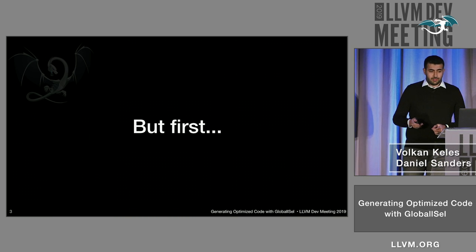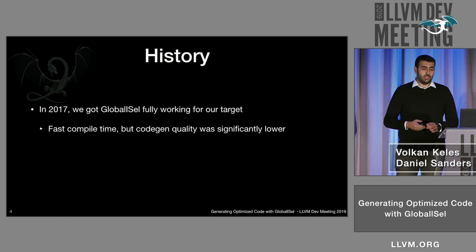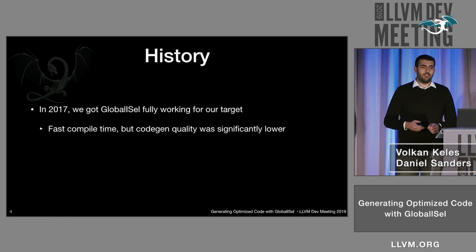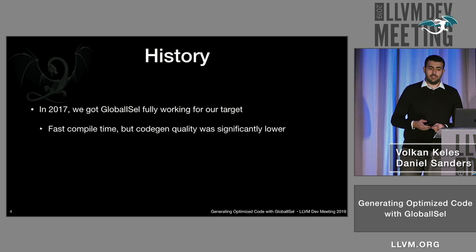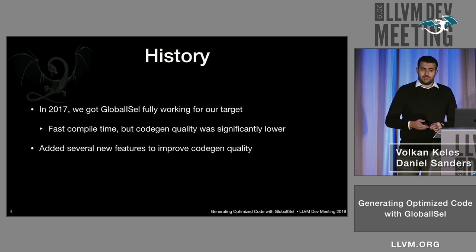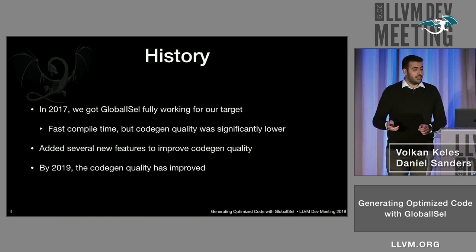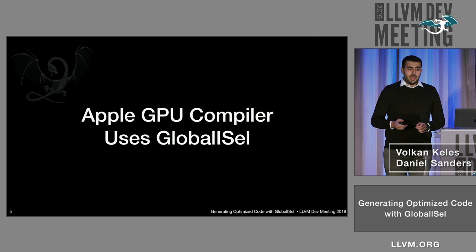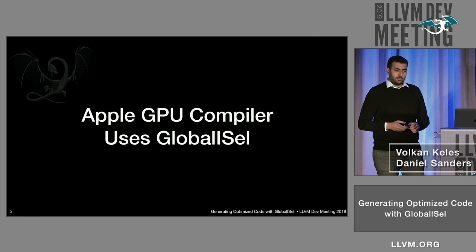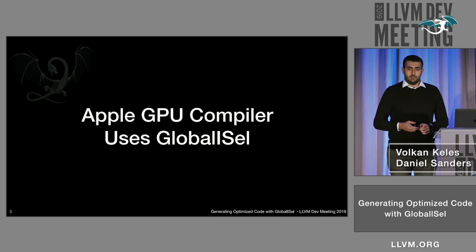First, here's a bit of history. Back in 2017, we got Global ISel fully working for our target, but we had not worked on the code quality yet, so it wasn't as good as SelectionDAG ISel. Over the past two years, we added several new features to improve the code gen quality. And by 2019, the code gen quality improved to the point that Apple GPU Compiler is now using Global ISel. It's enabled in iOS 13 and it's running on millions of Apple devices.